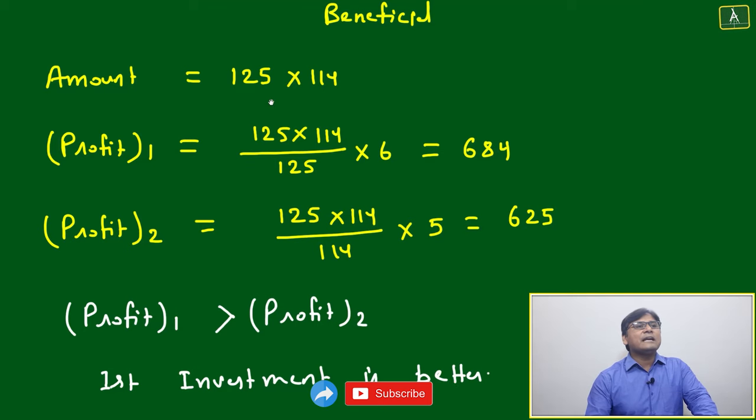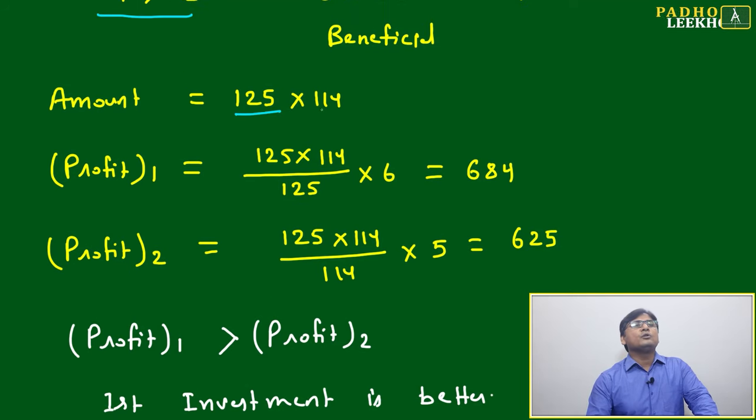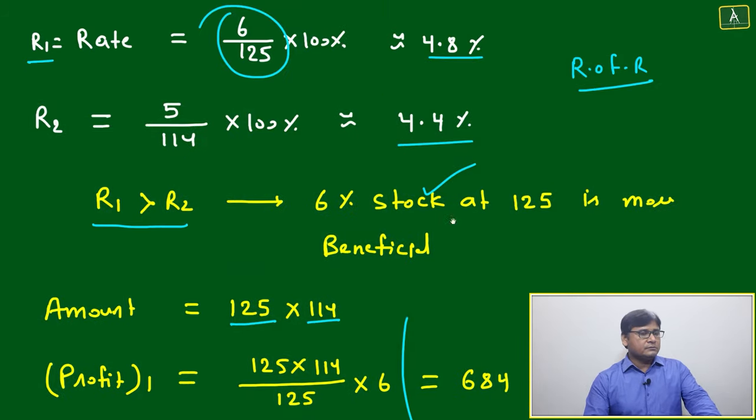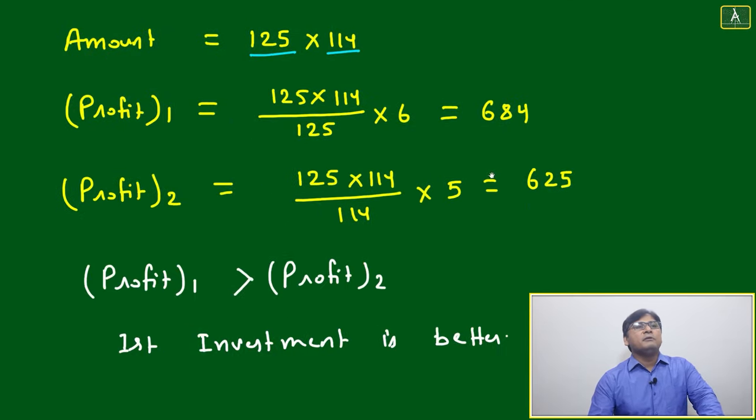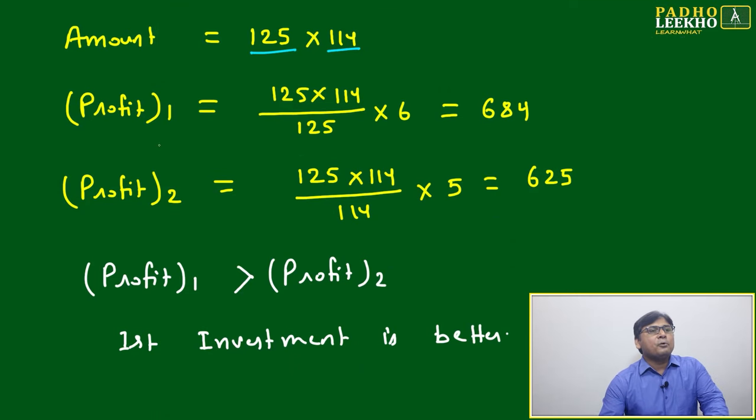Just for easy calculation we will take amount equal to 125 into 114. Why we are taking 125 into 114? These two numbers we are picking because these two numbers only, calculation will be done based on that.